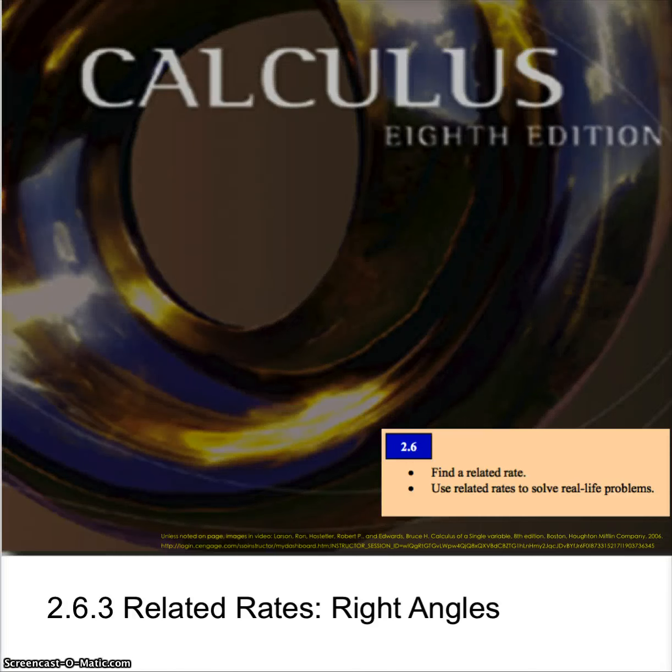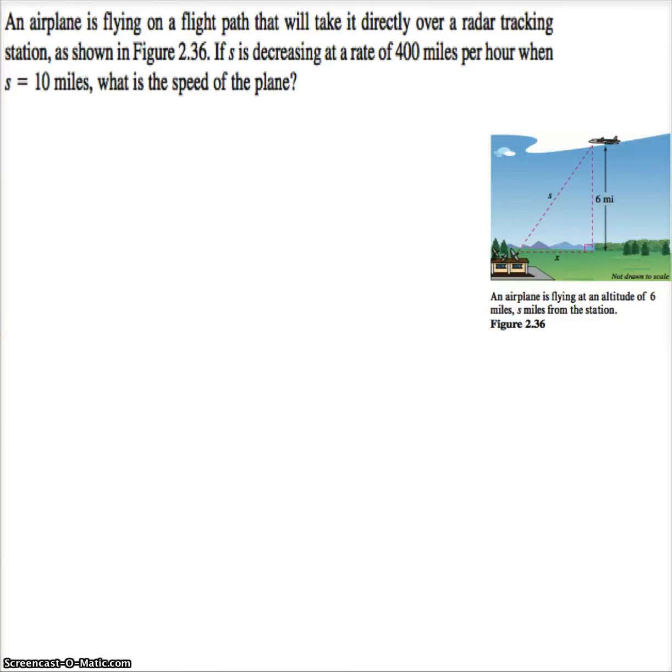Now let's look at related rates when we're dealing with things that are moving at right angles. For example, suppose I have an airplane that is traveling horizontally. It's not traveling vertically, it's traveling horizontally. It's not moving at an angle. And it's in a flight path that's going to take it directly over a radar tracking station.